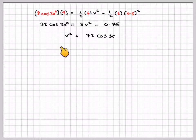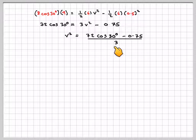Making V squared the subject we get V squared is 72 cos 30 plus 0.75 divided by 3.